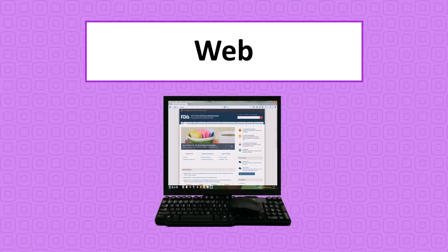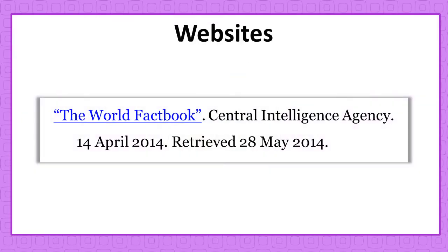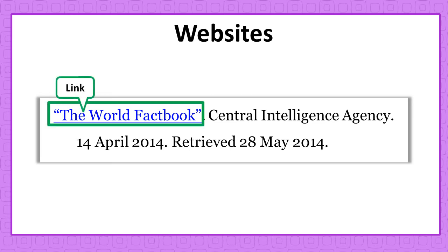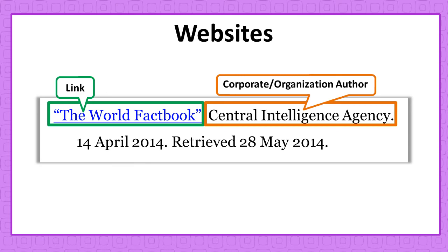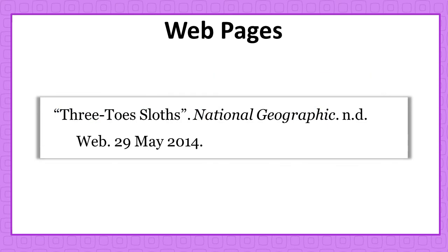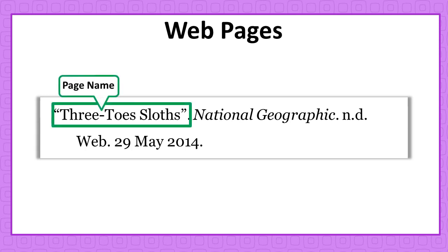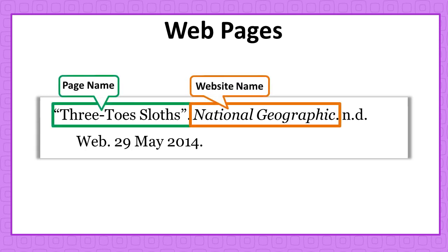Web sources can include full websites or individual web pages. The biggest clue that your source is a website or a webpage is the presence of a web address link. Also, many sites do not have a specific person as an author; instead, a corporate or an organizational author will be listed. Web pages usually contain the title of an individual page followed by the name of the entire website. If a link to the page is not present, the term 'web' may appear in the citation.